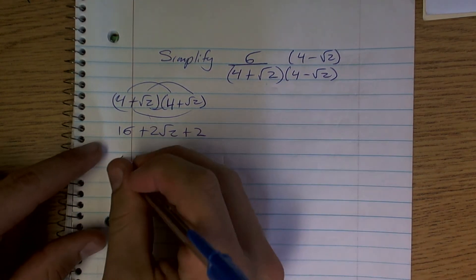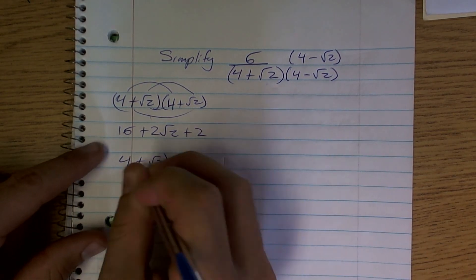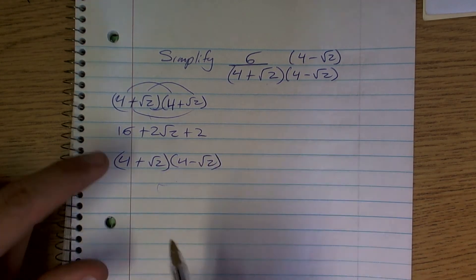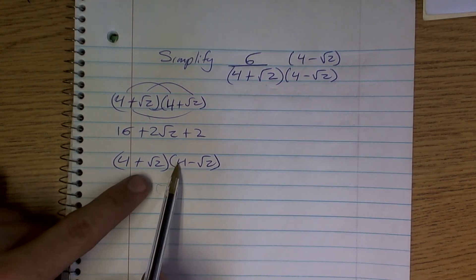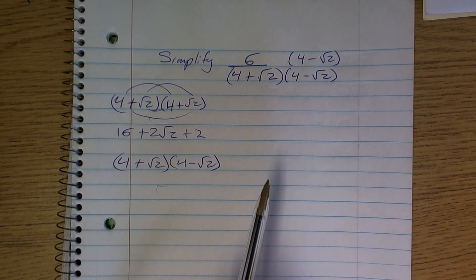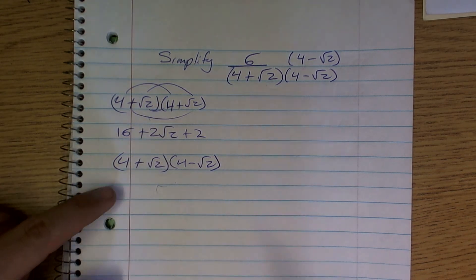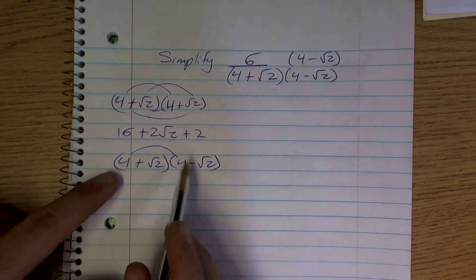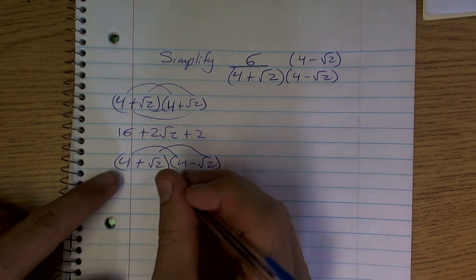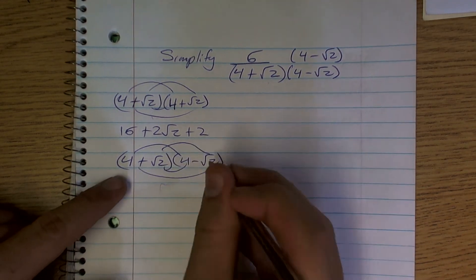So now, when I do 4 plus radical 2 times 4 minus radical 2, I have the same two first numbers and I have the same two last numbers. I don't need to use all my FOIL because this is a difference of two squares. So what I notice is, actually, I'll just show you so you can see it.